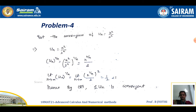Next problem: test the convergence of u_n = n²/2^n. Raising to the power 1/n: (n²/2^n)^(1/n) = n^(2/n) / 2. Taking the limit as n→∞: limit of n^(1/n)^2 / 2 = 1² / 2 = 1/2, which is less than 1. Hence by Cauchy's root test, this series is convergent.